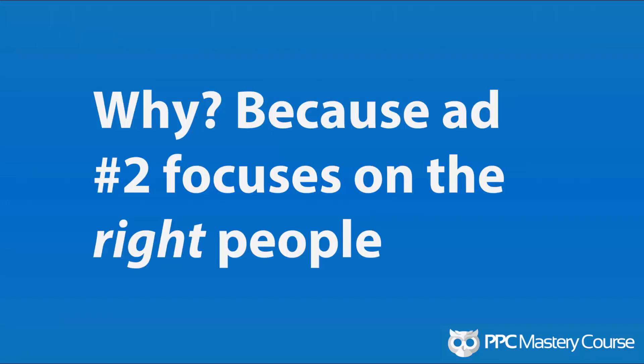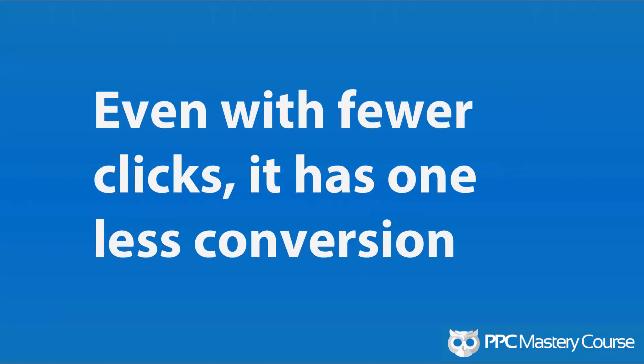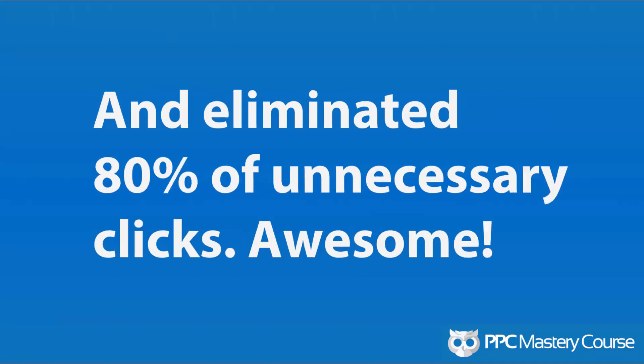Ad two is the better performer because it's focused on the right people. We got 20 clicks instead of 100, but we still have a strong conversion rate — actually much higher when we go after only the right clicks. With fewer clicks, it has only one less conversion and eliminated 80% of unnecessary clicks. We essentially 80/20'd this approach by choosing to get fewer clicks and only focus on the effective ones.